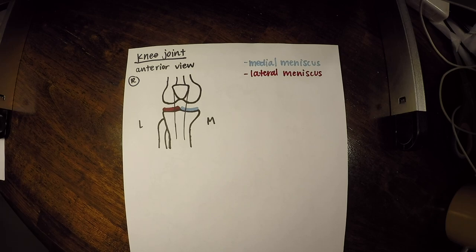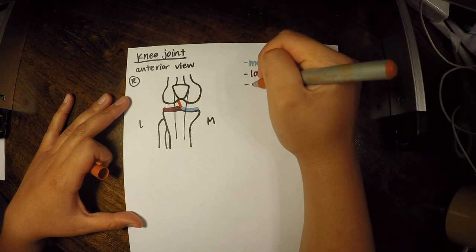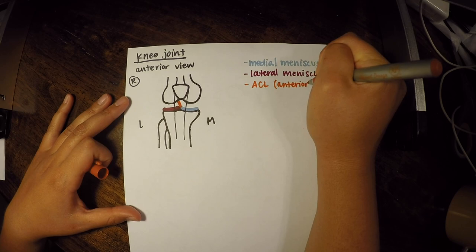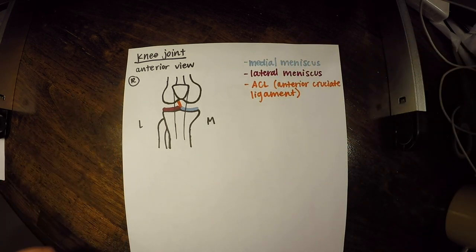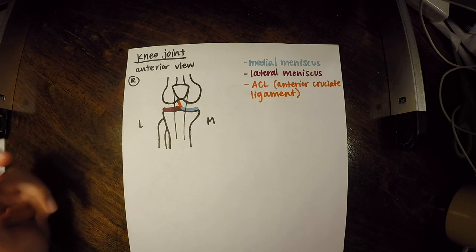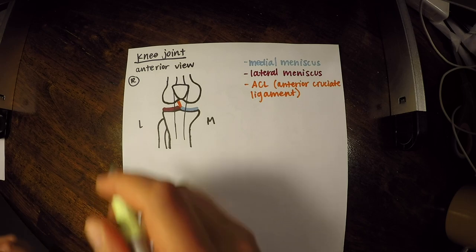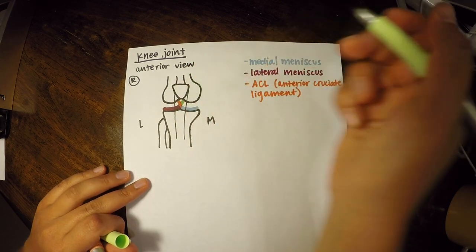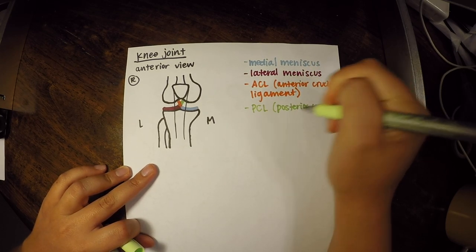The knee has four key ligaments. The first is the ACL, or anterior cruciate ligament, which crosses diagonally. Most people have heard about ACL injuries. Behind it is the PCL, or posterior cruciate ligament. Both serve as stabilizing forces for the knee joint.